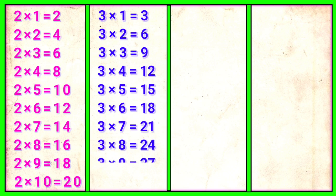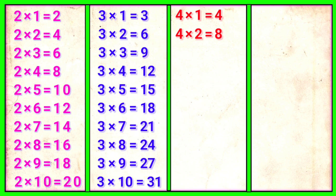3 9s are 27, 3 10s are 30. 4 1s are 4, 4 2s are 8, 4 3s are 12.